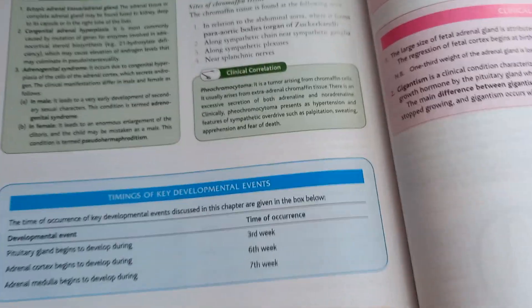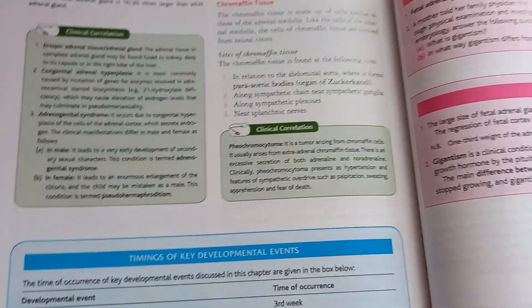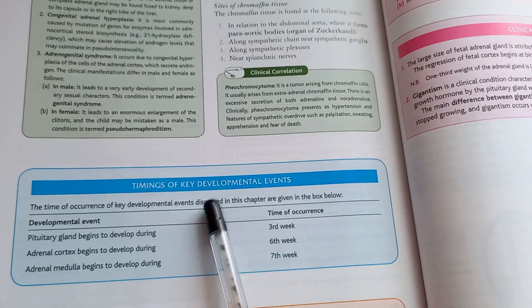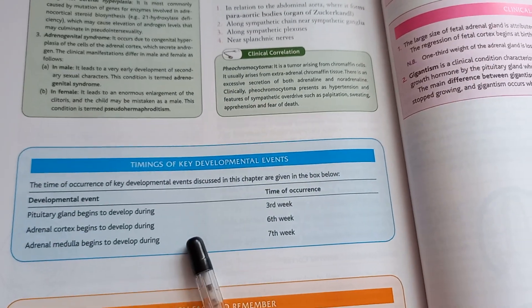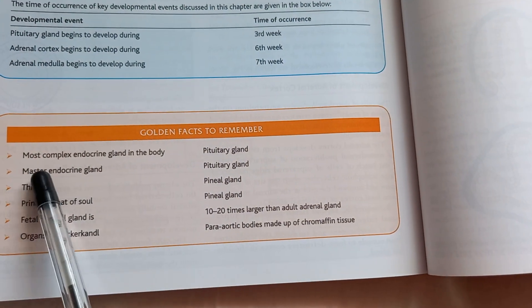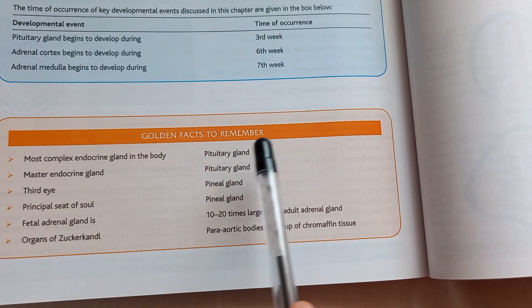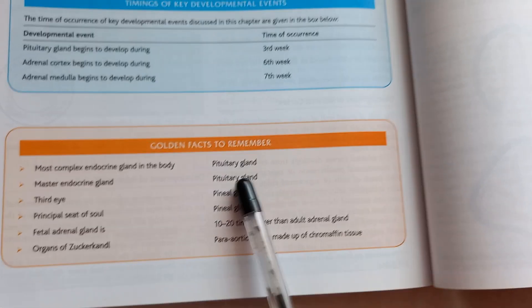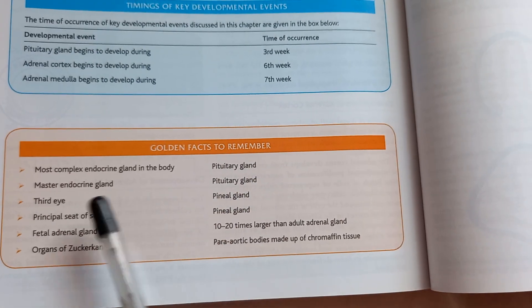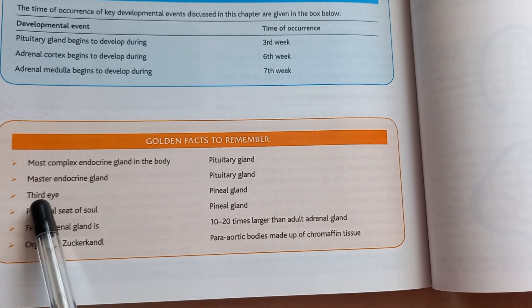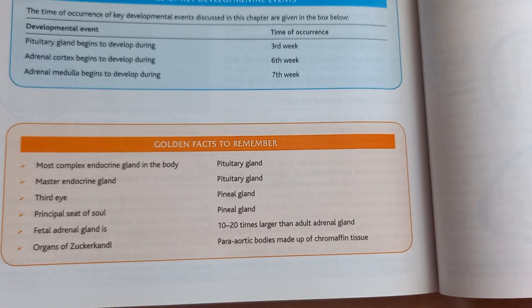At the end of every chapter they give clinical correlations, key developmental milestones, and golden facts to remember. For example, they state the master endocrine gland is the pituitary — not the hypothalamus, which is the master of the master — and that the pineal gland is a third eye.